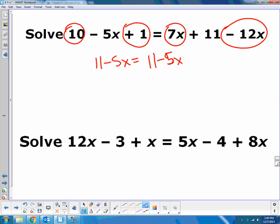If we get our x's all together, if I add 5x to both sides, I get that 11 equals 11, which is always true. We call that an identity. That says identity because it's always true.